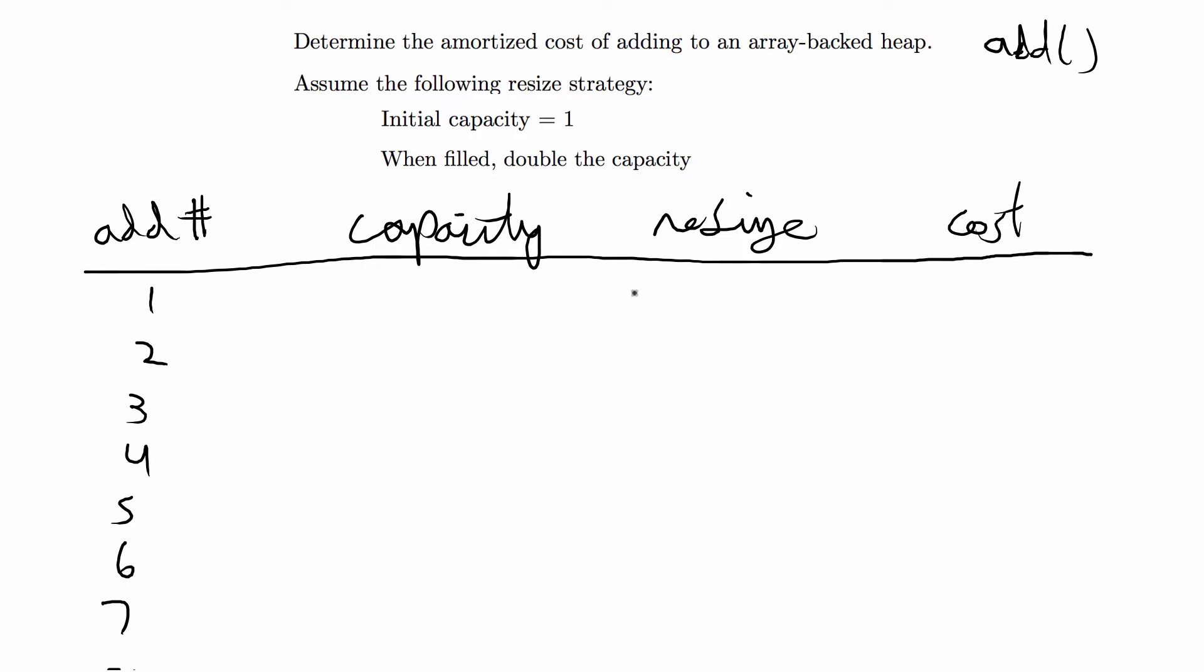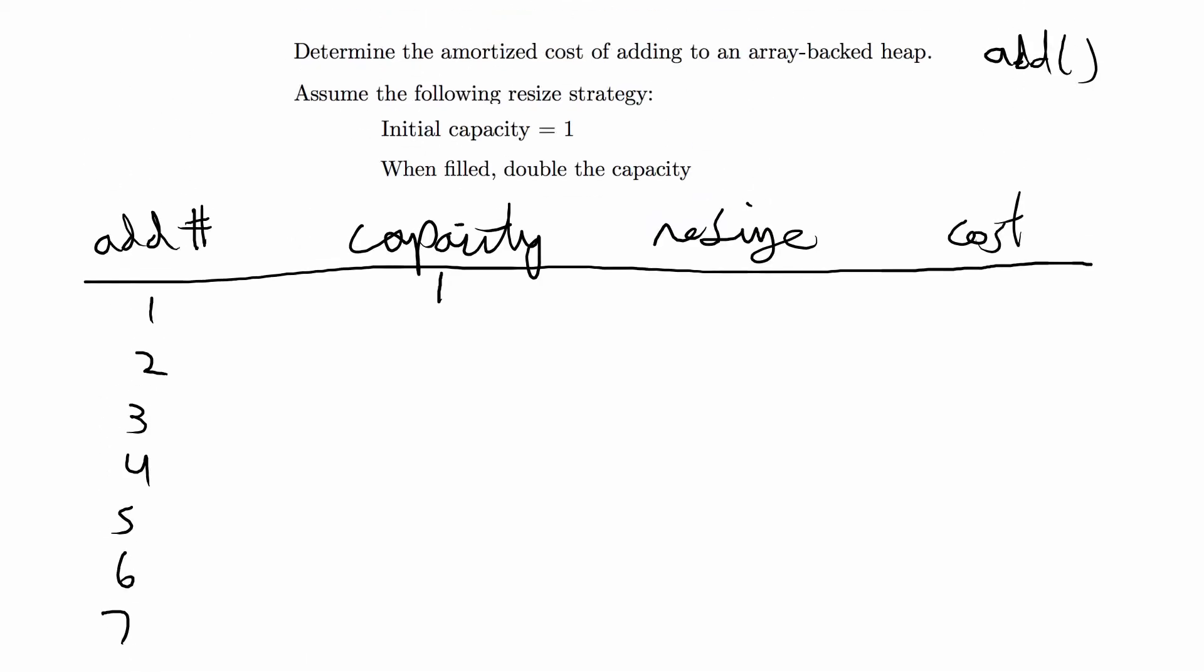The first time you're adding to the array, the array is empty and it has a capacity of 1. You don't have to resize because all we're doing is adding for the first time, and we're just going to say that we know when you're doing this what the cost of adding to an array heap is. That's going to be, in general, O(log n). So when you're adding 1 the cost is going to be log of 1 and so we're done with the first one.